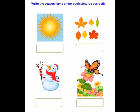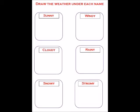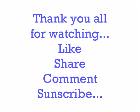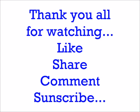The next one: I have given here six weather types — sunny, windy, cloudy, rainy, snowy, and stormy. The child has to draw the weather under each name, whatever he or she feels like. They can draw clouds, or what the outside trees look like in each weather, or anything according to the weather.